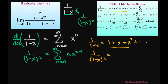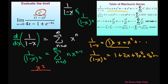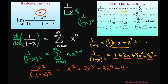Differentiating gives us — we lose the 1 — so that's going to be 1 plus 2x plus 3x squared plus 4x cubed and so on. Now for us, we're going to have to multiply this also by x squared because we have x squared in the numerator. So x squared divided by 1 minus x squared is going to be x squared plus 2x cubed plus 3x to the 4th plus 4x to the 5th.